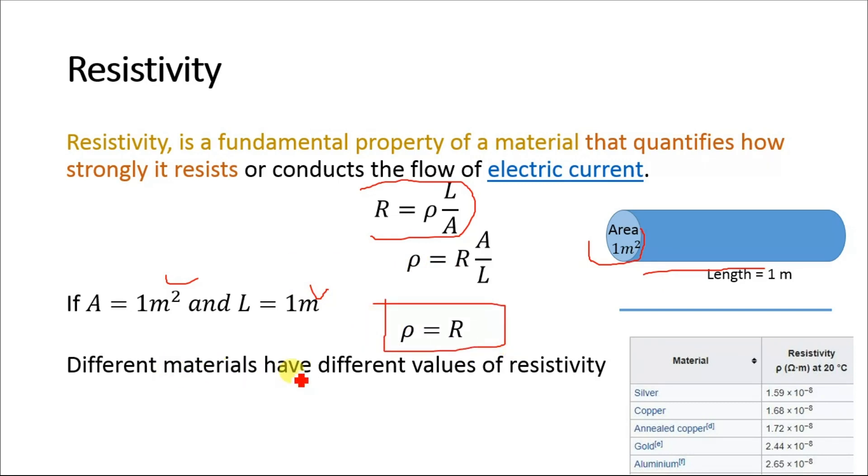Different materials have different values of resistivity. For silver, this is 1.59 × 10⁻⁸ Ω·m. Similarly for copper (annealed copper), gold, and aluminum, each has its own resistivity value.